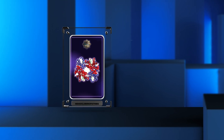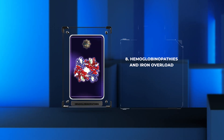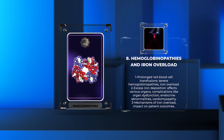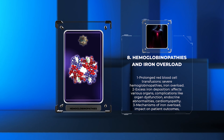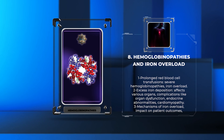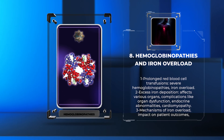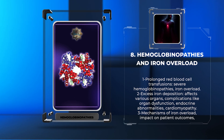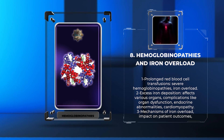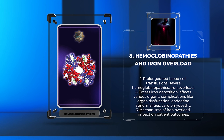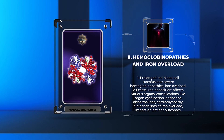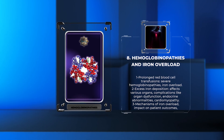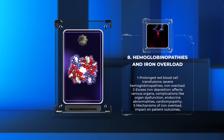Prolonged red blood cell transfusions in severe hemoglobinopathies, such as thalassemia major, can result in iron overload. Excess iron deposition affects various organs, leading to complications like organ dysfunction, endocrine abnormalities, and cardiomyopathy. We will examine the mechanisms of iron overload, its impact on patient outcomes, and the management strategies to maintain iron balance.